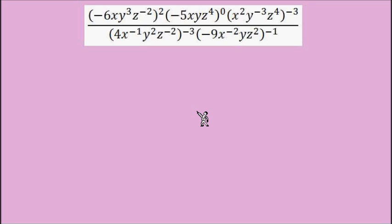Here's another example for us to look at. I picked a problem that looks like it might be pretty difficult, but we have some good rules and good steps that are going to make this problem manageable. We start, as always, with the exponents that are outside of parentheses, working them into each exponent inside the parentheses. Even if I don't see an exponent, I should think that it has an exponent of one so I don't overlook it.